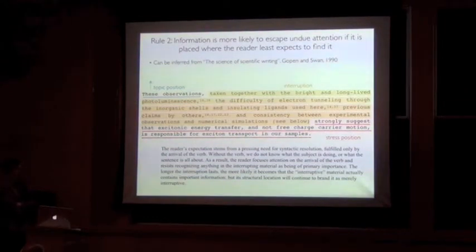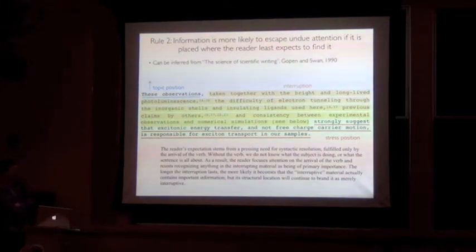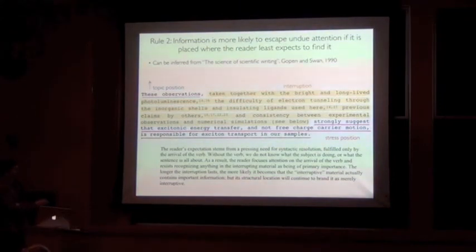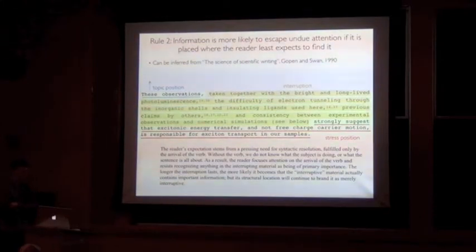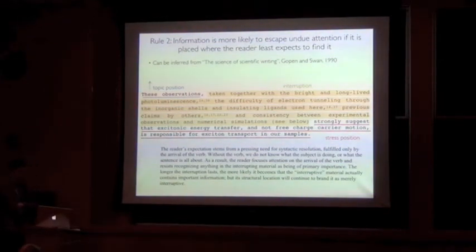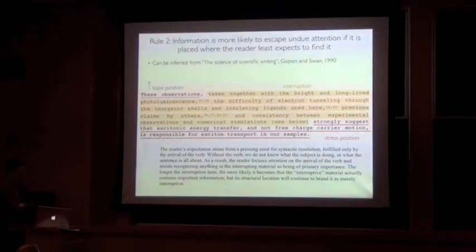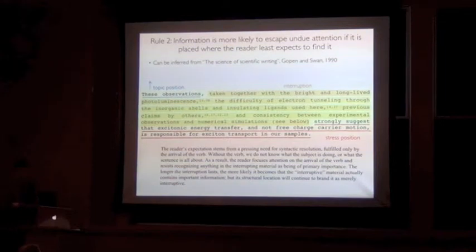However, what comes between these two positions could in some sense be interpreted as an interruption. So the reader's expectation stems from a need for resolution of the syntax, fulfilled only by the arrival of the verb, which either here strongly suggests or is responsible for. So without the verb, we don't know what the subject's doing or what the sentence is all about. And as a result, the reader focuses attention on the arrival of the verb and resists recognizing anything in the interrupting material as being of primary importance. The longer the interruption lasts, the more likely it becomes that the interruptive material actually contains important information, but its location will continue to indicate that it's merely an interruption.